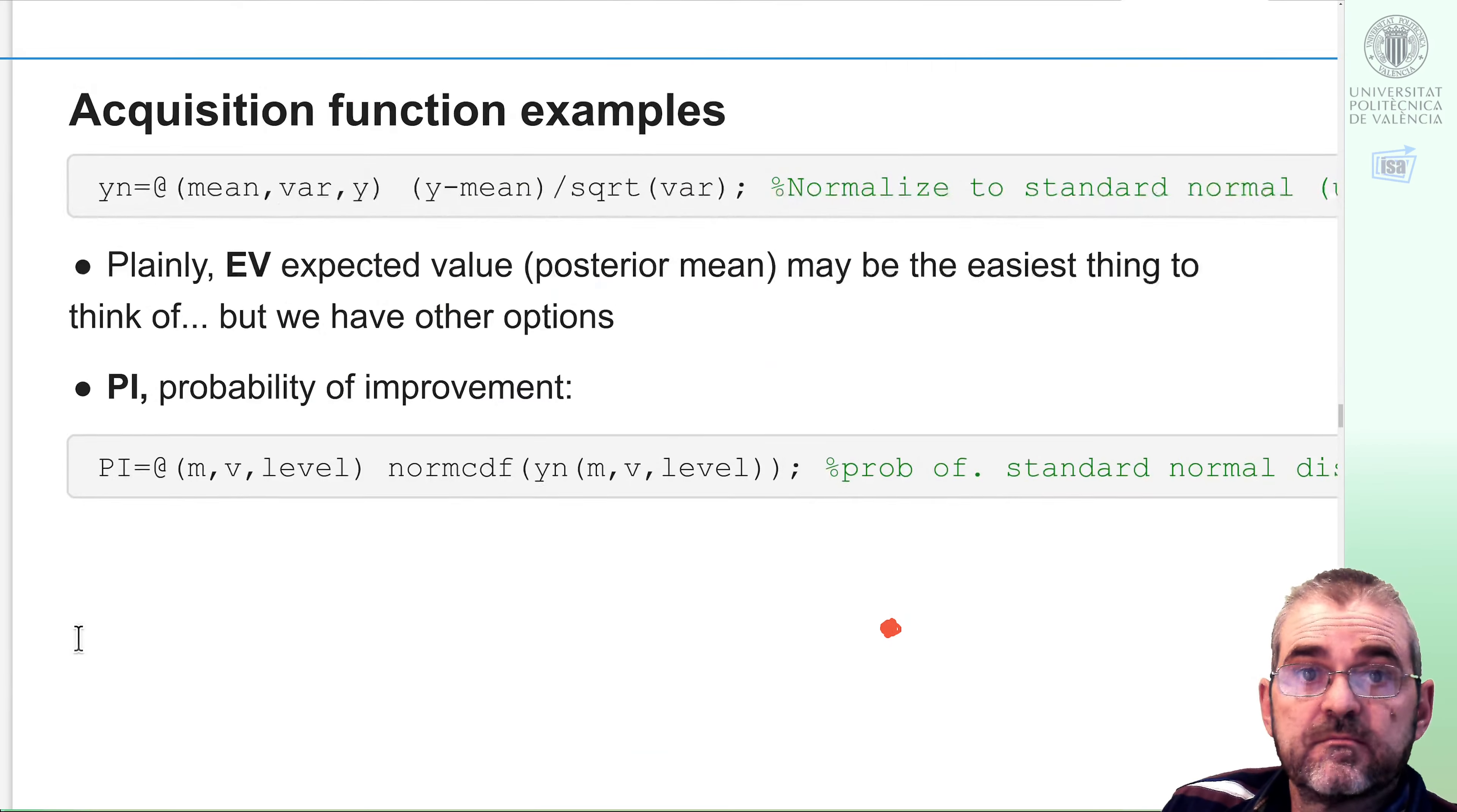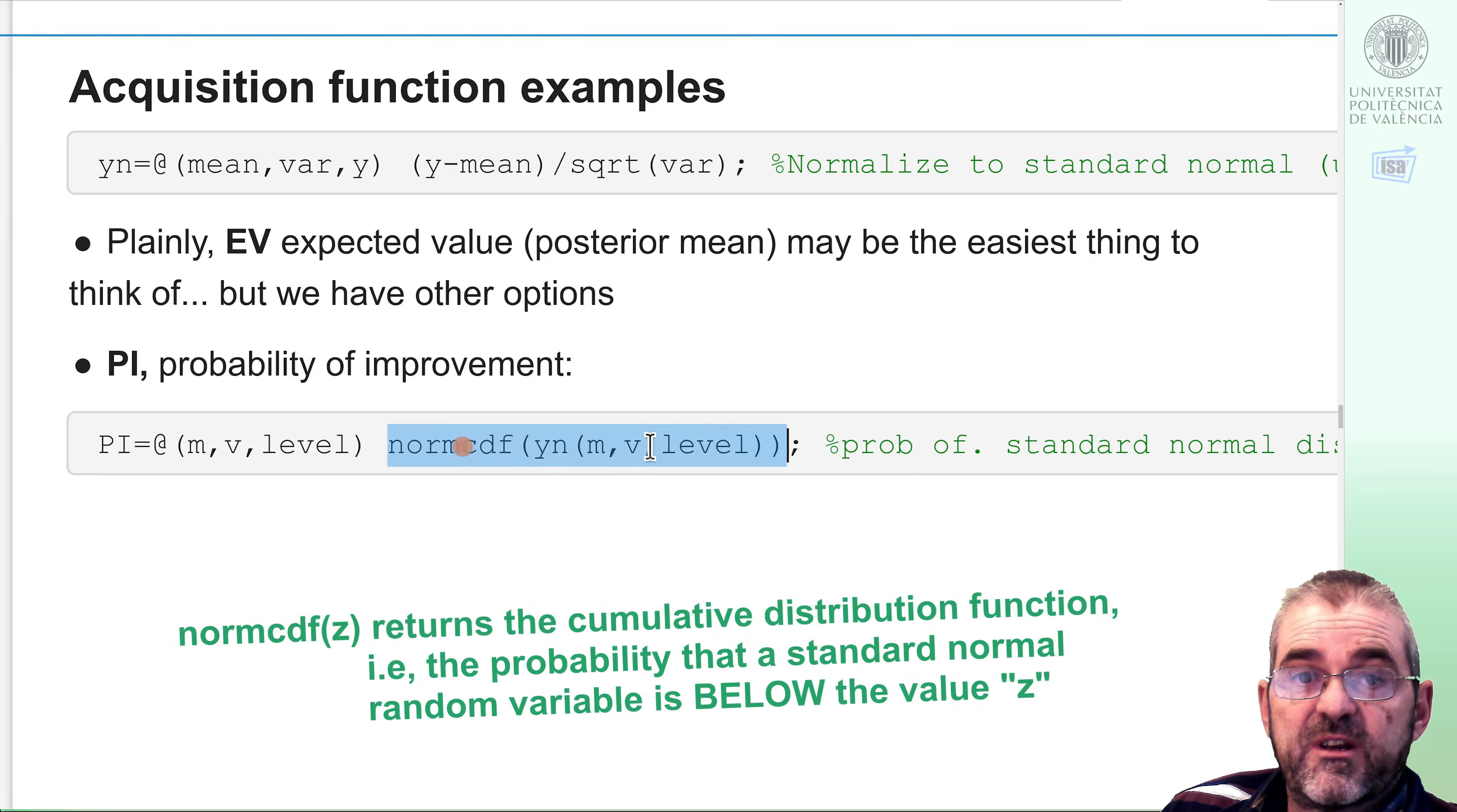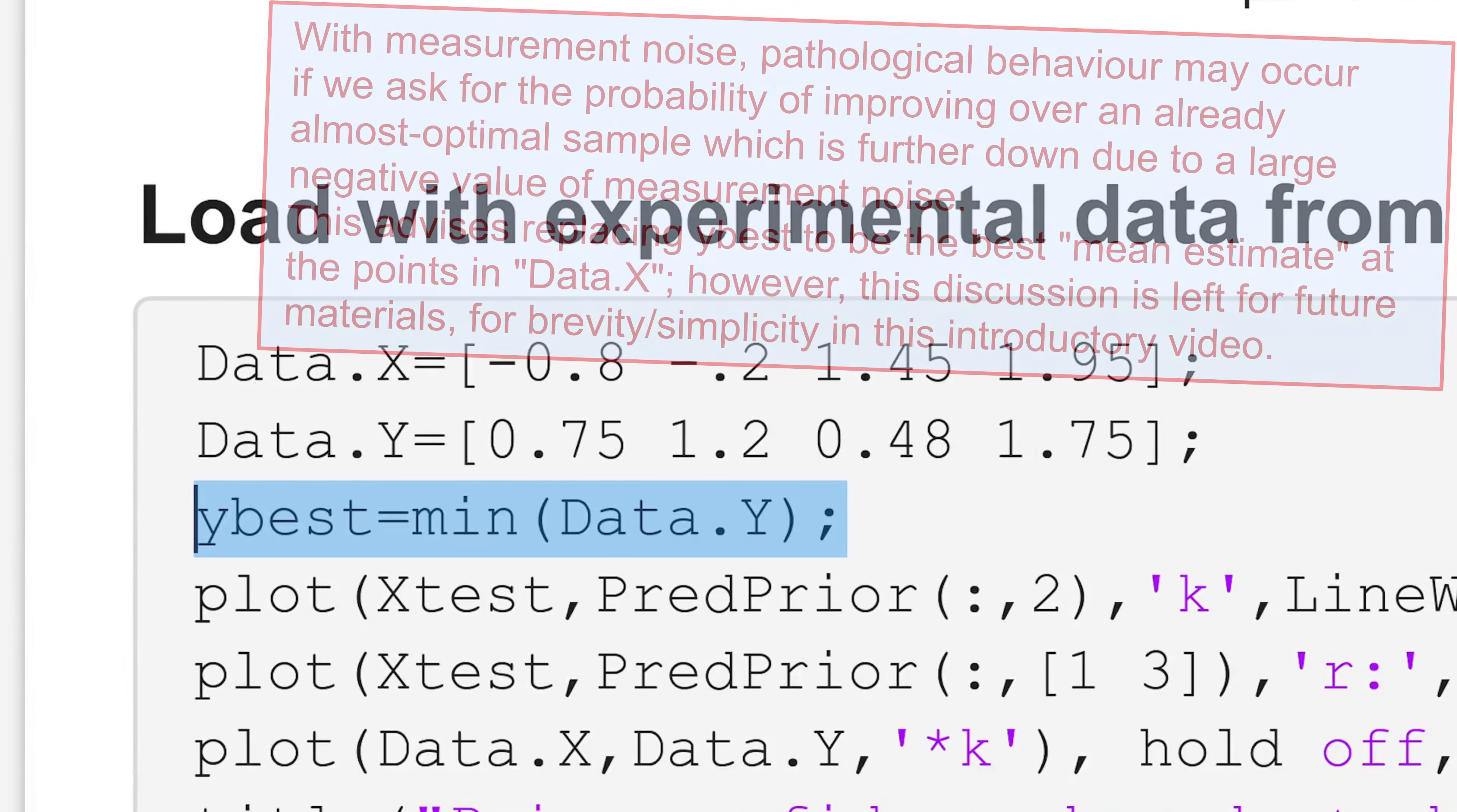Instead of this, that could be considered an acquisition function. This green histogram telling me how good the point is. The thing is that this acquisition function is maybe hard to evaluate and we seek simpler alternatives. The first one we are going to discuss is the so-called probability of improvement, which is computed as follows. This thing normalizes a normal distribution. It subtracts the mean and divides by the standard deviation.